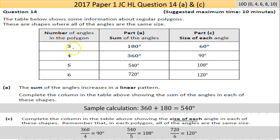In the polygon with three angles, the sum is 180, so that's 180 divided by 3, which gives you 60. Same thing with 360 divided by 4, which gives you 90. 540 divided by 5 gives you 108, and 720 divided by 6 gives you 120.